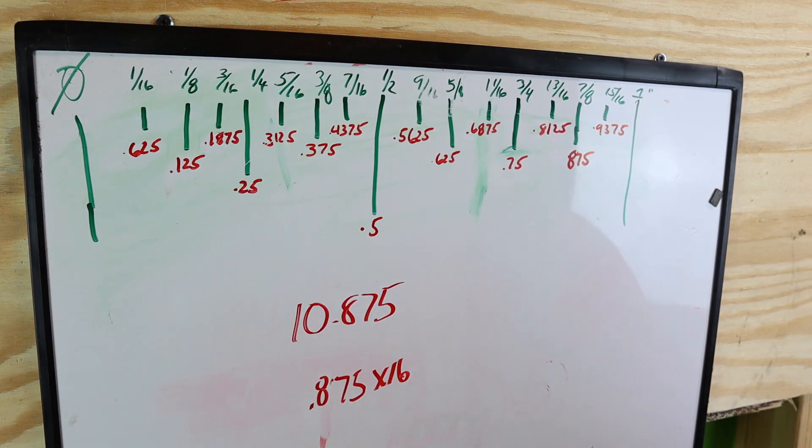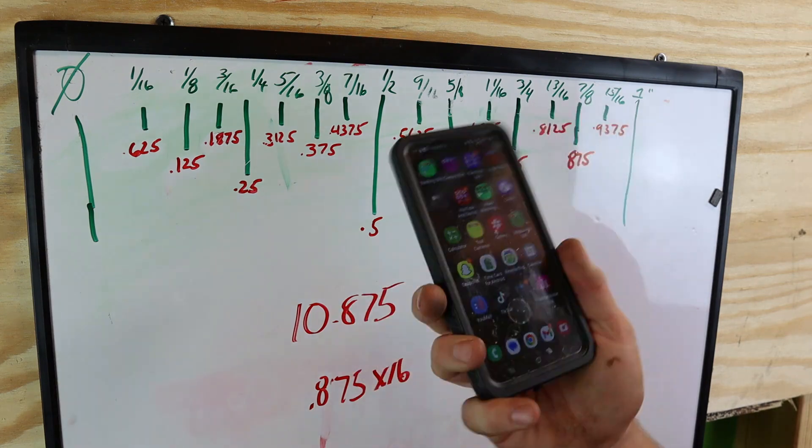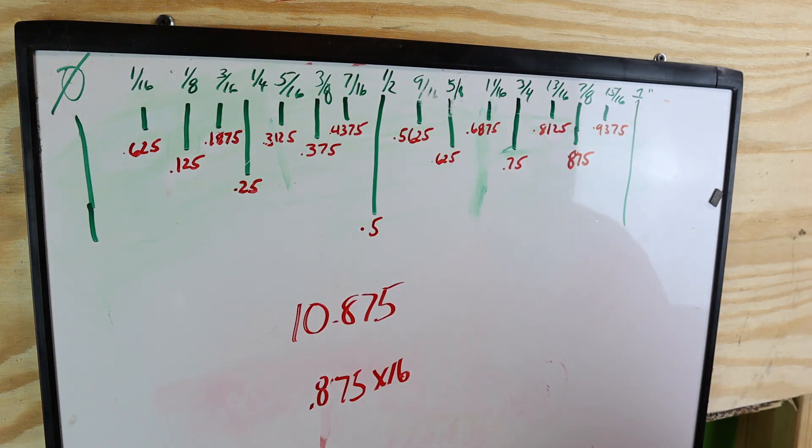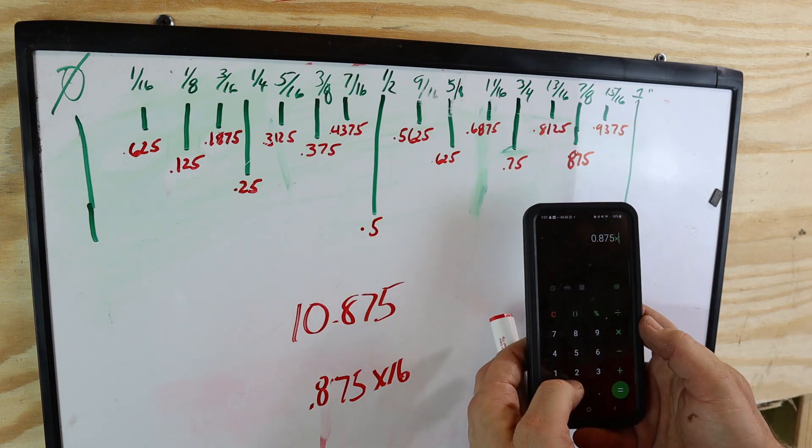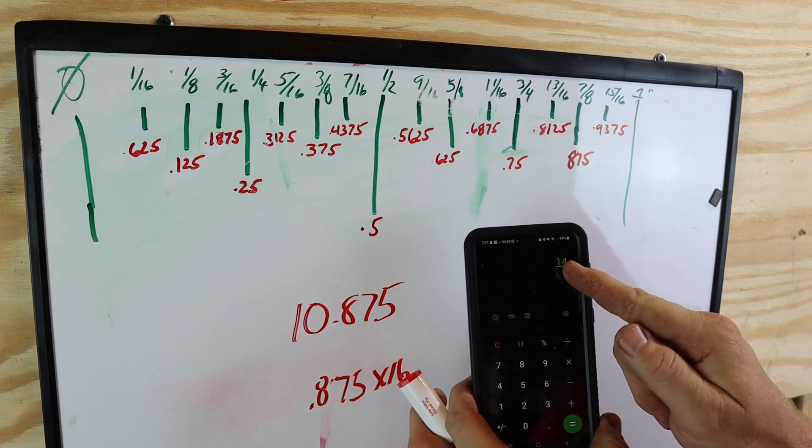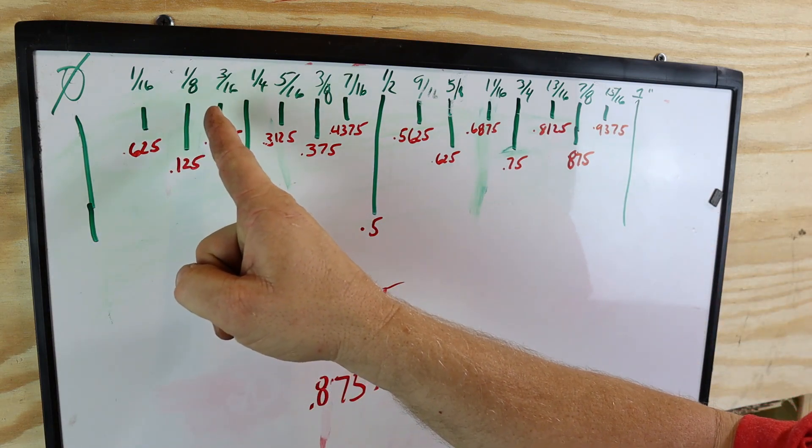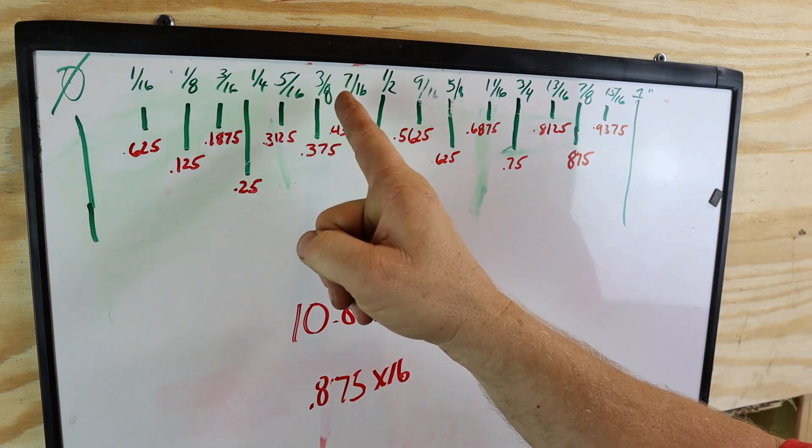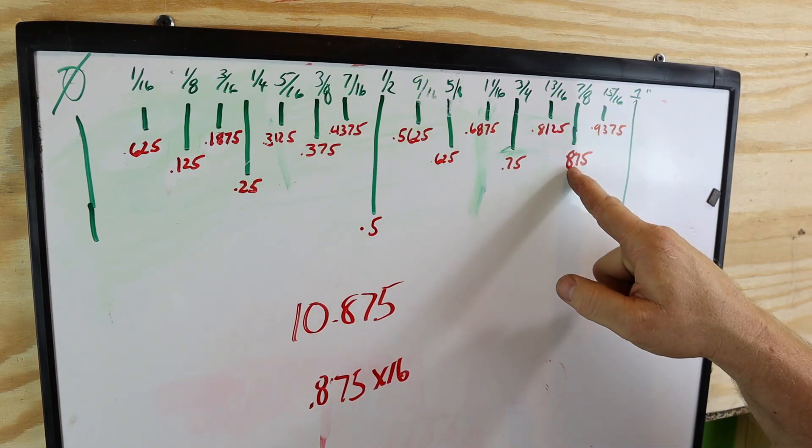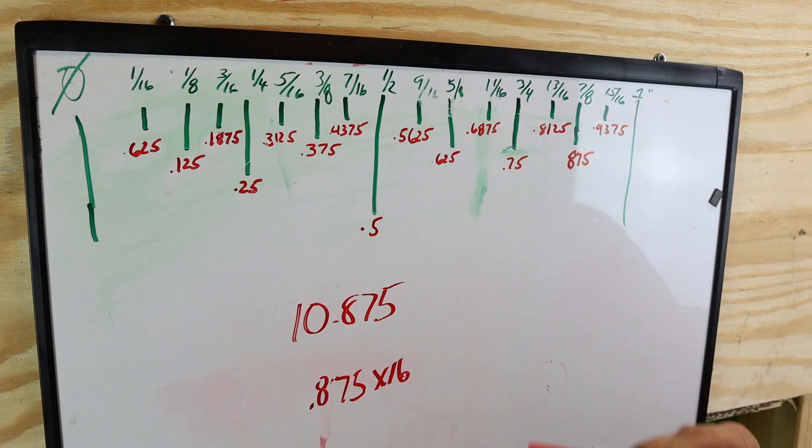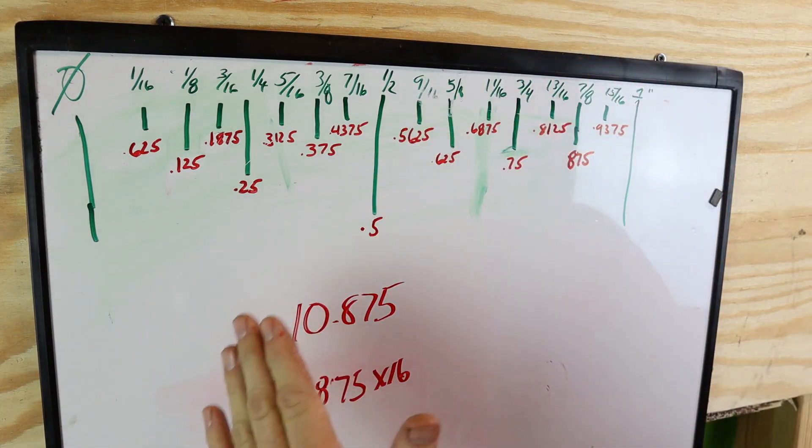All right, if you're in the field, normally you'll have your cell phone with you almost every time. So you would take that 0.875 times 16 equals 14 spaces. So you count 1, 2, 3, 4, 5, 6, 7, 8, 9, 10, 11, 12, 13, 14, and that's basically the easiest way to do it.